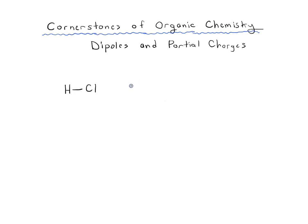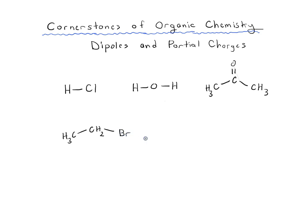We're going to draw out some very simple molecules — nothing too complicated. The goal of this video is so that I can teach you how to look at a simple molecule and understand where the electrons are and where they're not, so we can figure out how they might react. One of the key rules in chemistry and specifically organic chemistry is that opposite charges attract and like charges repel. If you understand that concept, it'll take you pretty far in understanding why certain reactions happen and why certain reactions don't.